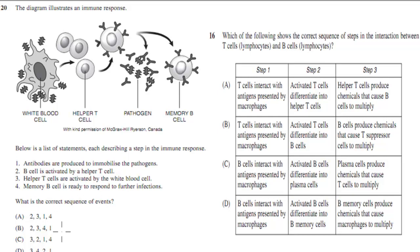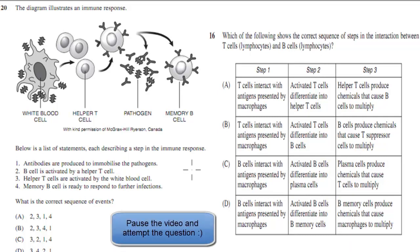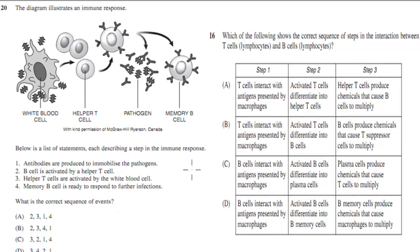The next question is: which of the following shows the correct sequence of steps in the interaction between T lymphocytes and B lymphocytes? There are different types of steps listed. Pause the video and attempt the questions. Welcome back — the answer to the first one is C, and the next one is A.